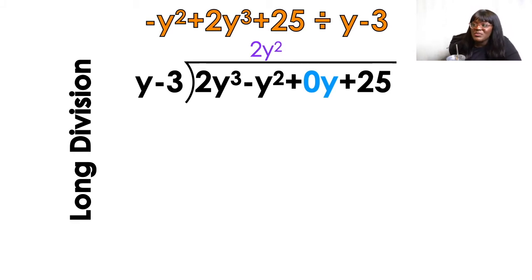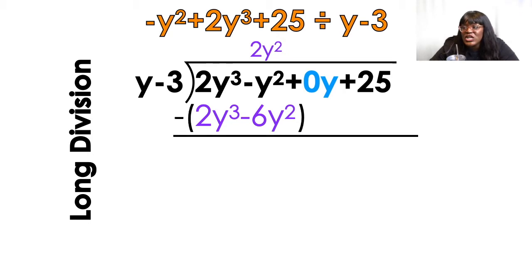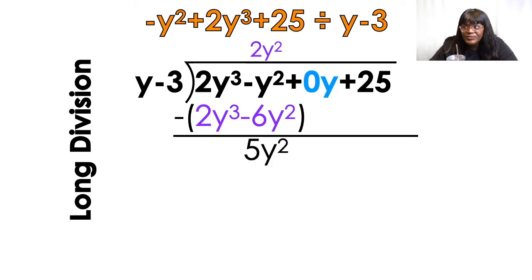Then I'm going to multiply that by the y and then by the negative 3 also on the outside. 2y squared times y is 2y cubed, and 2y squared times negative 3 is negative 6y squared. So you're going to subtract now — put that in parentheses and subtract. 2y cubed minus 2y cubed is going to cancel out. And then I'm going to have negative y squared minus minus 6y squared. Minus minus turns into a plus, so that's how I got 5y squared.